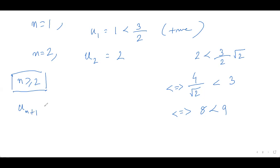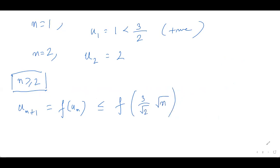So u_{n+1} = f(u_n) ≤ f((3/2)√n) because my function is strictly increasing. That is nothing but (3/2)√n + 2/(3√n), which simplifies to (9n + 4)/(6√n).